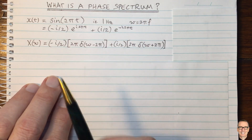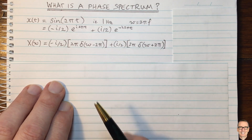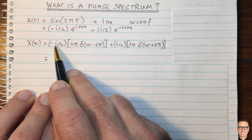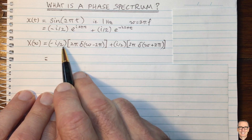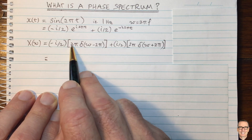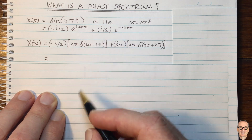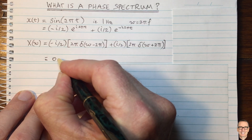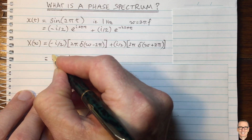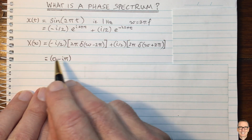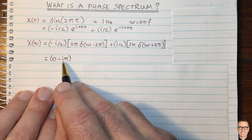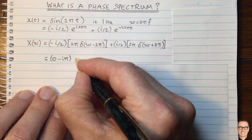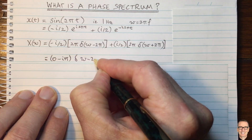Let's rewrite the term out the front in a particular way. We can see here that the 2 cancels, the half cancels with the 2, and we're going to have negative i pi. I'm going to write that as 0 minus i pi, just to really point out that this is a complex number with a 0 real part and imaginary part of pi. That's multiplied by delta of omega minus 2 pi.